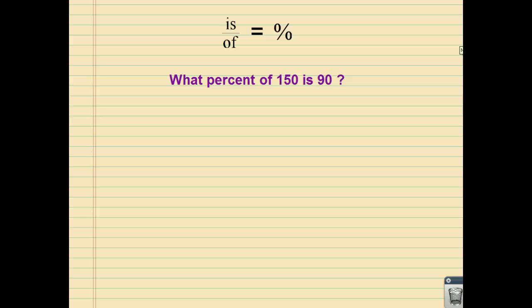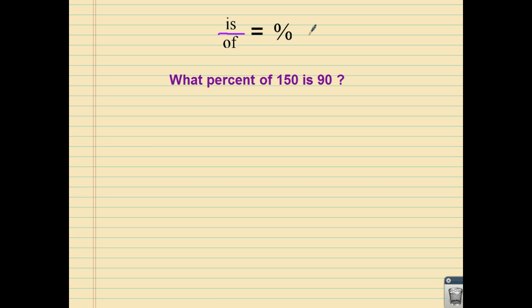Now we have a couple different types of percent problems. They use words, and a common method of solving is the is-over-of proportion: is divided by of equals percent over 100. Some teachers say is over of equals percent over 100 — we all know that percent is a value per 100. The hardest part is figuring out who the is and the of are. In this case, it's not too difficult: What percent of 150 is 90? So the is is 90.